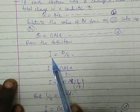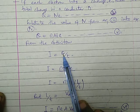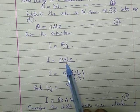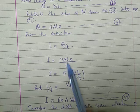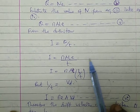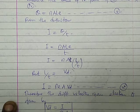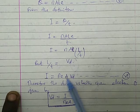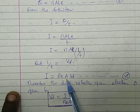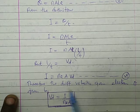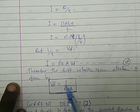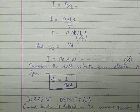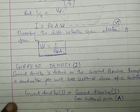Solving for current I: current I equals Q divided by T, which gives I equals n times A times L times e divided by T. Since length divided by time equals velocity — specifically drift velocity — we get I equals n times e times A times VD. Therefore, the drift velocity VD equals I divided by (n times e times A).